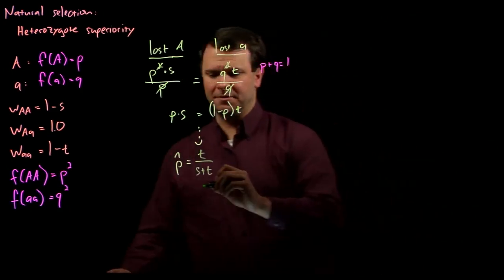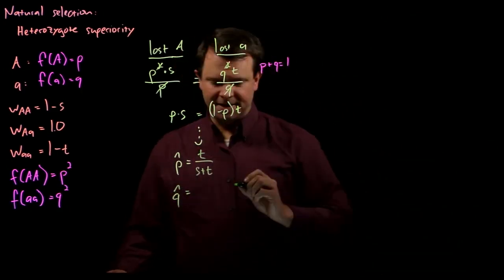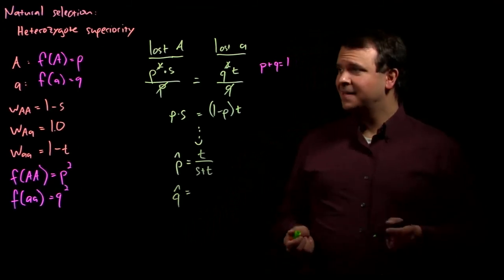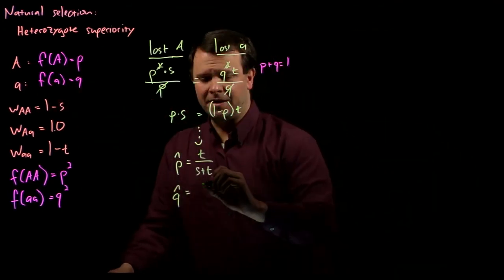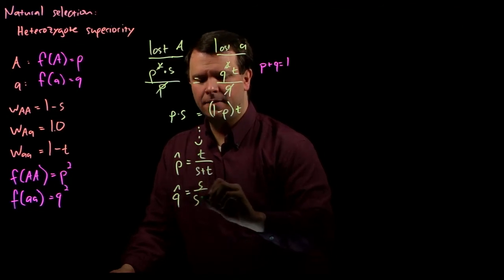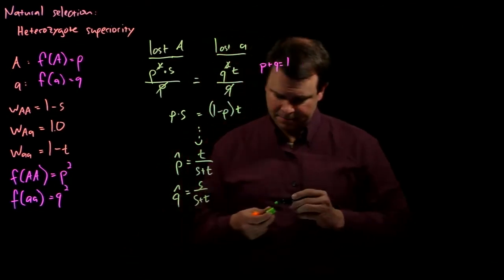And similarly, using the same process, we find that q-hat, the equilibrium frequency for our little a allele, is s over s plus t.